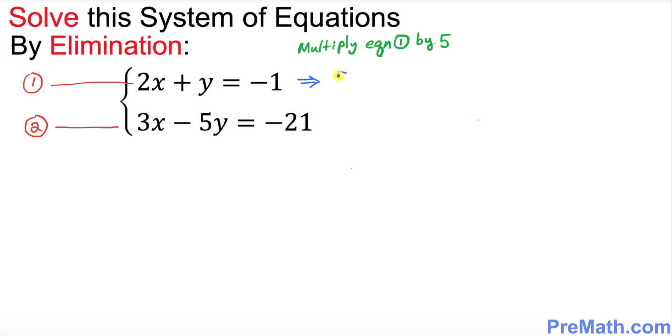I'm going to multiply both sides. Just put up five and everything 2x plus y equals negative one. So let's go ahead and distribute this.